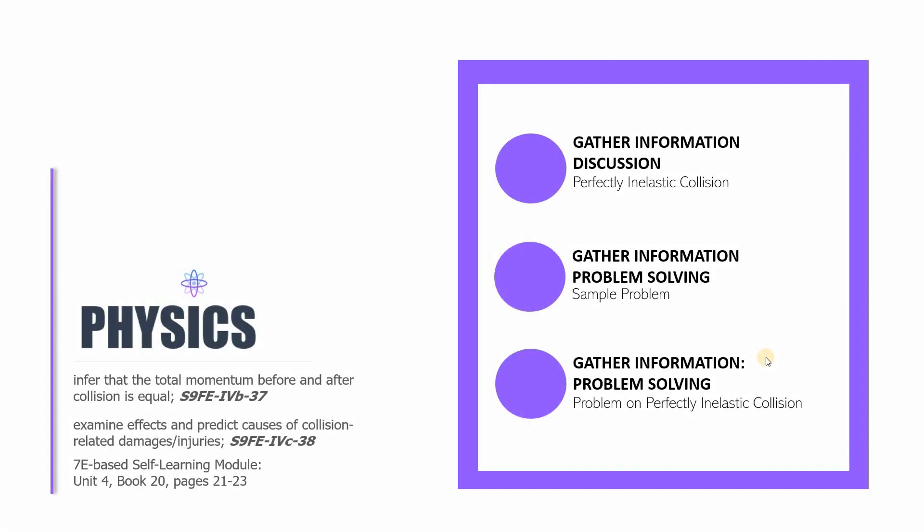Hello and welcome to the 19th session of Physics 9. I am Sir CJ and in this video lesson we have the following parts: the first part is gather information discussion about perfectly inelastic collision and this is the last type of collision that we will be discussing in this series.